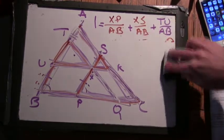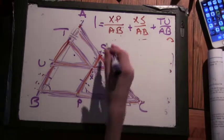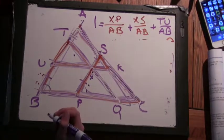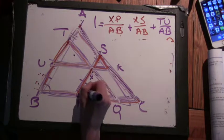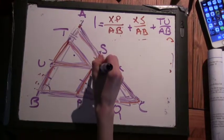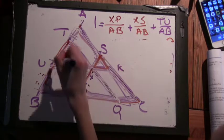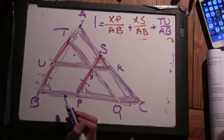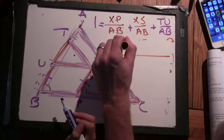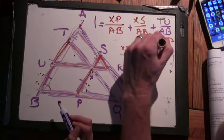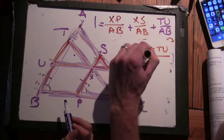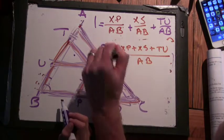So, we have, these all have the common denominator, so we can just add them up. So, we have XP, XS, and then TU. Okay. So, you're right. We have XP plus XS plus TU all over AB. And we're wondering, why does that equal one? What would that mean if that ratio equals one?